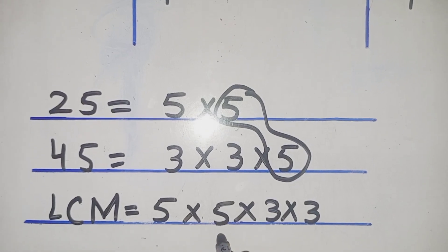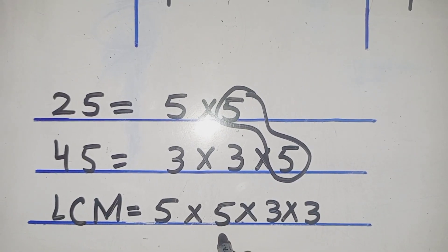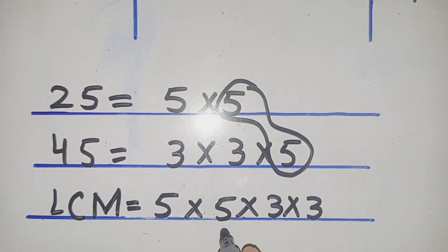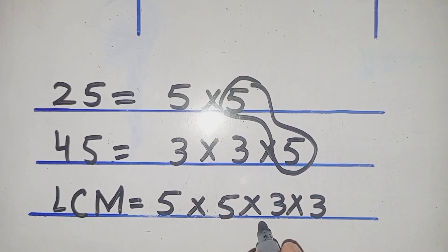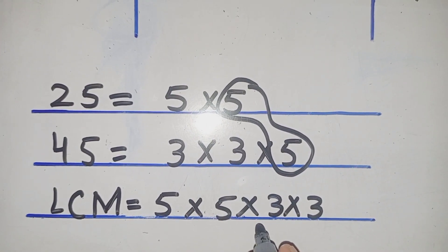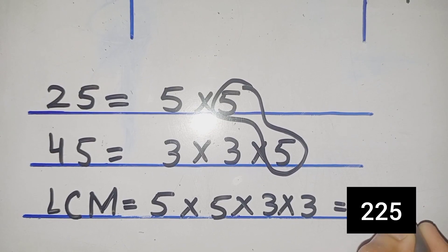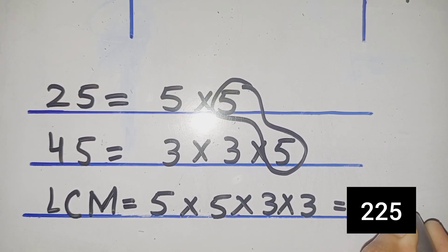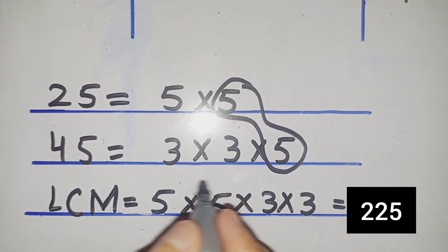5 fives are 25, 25. 3s are 75, 75. 3s are 225. So LCM of 25 and 45 is 225.